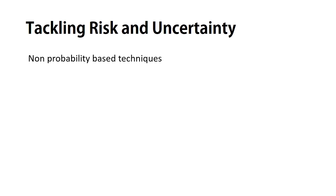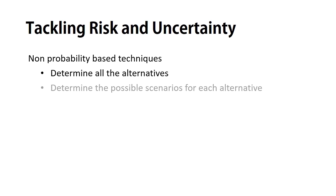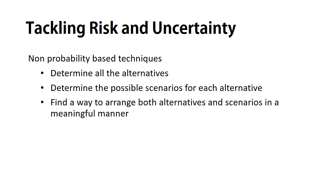One of the easier approaches under non-probability-based techniques is by determining the different alternatives available to the decision maker. Such decision analysis starts by identifying the different alternatives available. Once determined, we identify the different possible scenarios for each alternative. With information about both alternatives and scenarios, we need to arrange them in a meaningful manner so the decision maker can decide which alternative to take up.